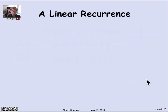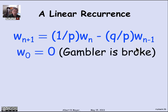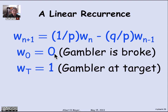That's just a linear recurrence. Reformulated: W_{n+1} = (1/p)·W_n − (q/p)·W_{n−1}. We also have boundary conditions: W_0 = 0, since the probability of winning if you start broke is 0; and W_t = 1, since if you're already at your target you've won. These boundary conditions enable us to solve the linear recurrence.